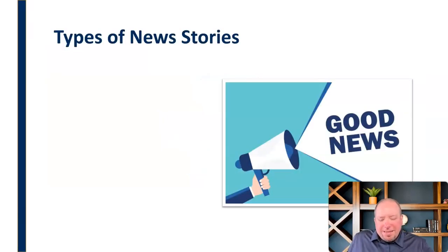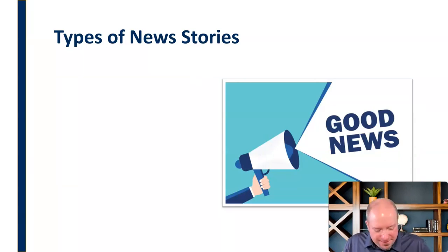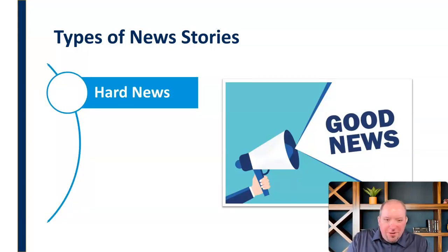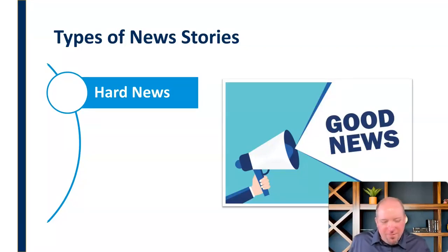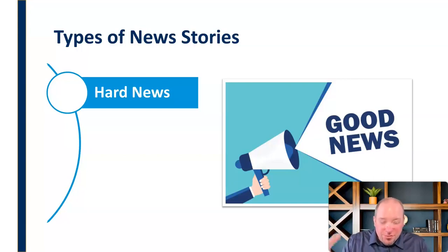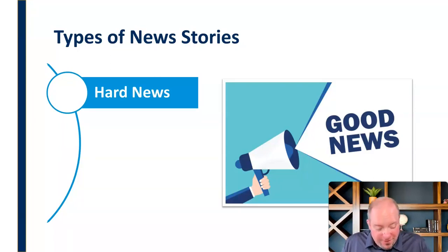First, let's quickly classify and categorize. There are a couple of different types of news stories. First, there's what we call hard news. Hard news is what you would see in the newspaper generally, like on the front page. It's just the basics — just the facts. It gives us the bare details and some context, and it's what we would call straight news or hard news: very objective in terms of the way it's presented, just giving us that information so that we're aware of it.